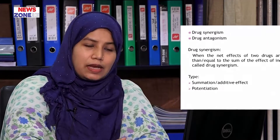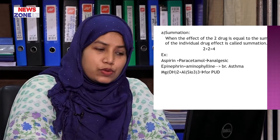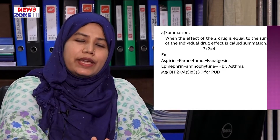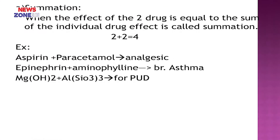Drug synergism is of two types: number one, summation, and number two, potentiation. Summation means additive effect. When the effect of two drugs is equal to the sum of their individual drug effects, it is called summation. Mathematically, we can say 2 plus 2 equals 4. The examples are aspirin and paracetamol — both produce analgesic effects. Aspirin works individually and paracetamol also acts individually, but when combined, their action is just like 2 plus 2 equals 4.